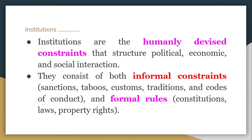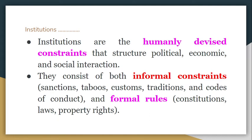Institutions can be classified into formal and informal. According to North — Douglas C. North — the most commonly agreed upon definition of institutions is provided by North. According to him, institutions are the rules of the game of a society.